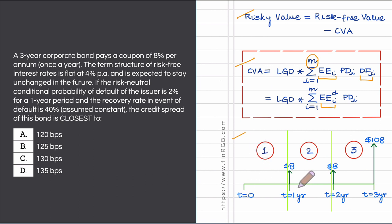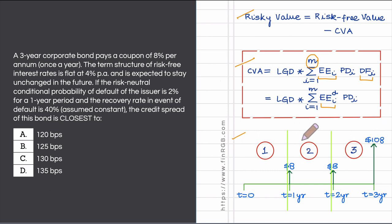Let us draw the cash flow diagram of this corporate bond. Assuming a face value of $100, after one year I get a coupon of $8, after two years another coupon of $8, and at maturity I get the remaining $8 coupon plus the principal of $100. For this CVA calculation, I will subdivide the three-year horizon into three time intervals, one corresponding to each year of the bond's life.